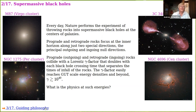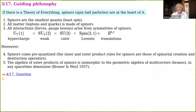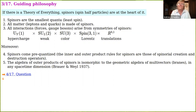I started thinking about this a few years back. When I started learning about general relativity to understand black holes, I became intrigued by spinors. It has seemed to me for a while that if there is a theory of everything, then spinors — spin-half particles — should be at the heart of it. Spinors are the smallest quantum in the sense of having the least non-trivial spin. All matter — meaning leptons and quarks — is made of spinors.